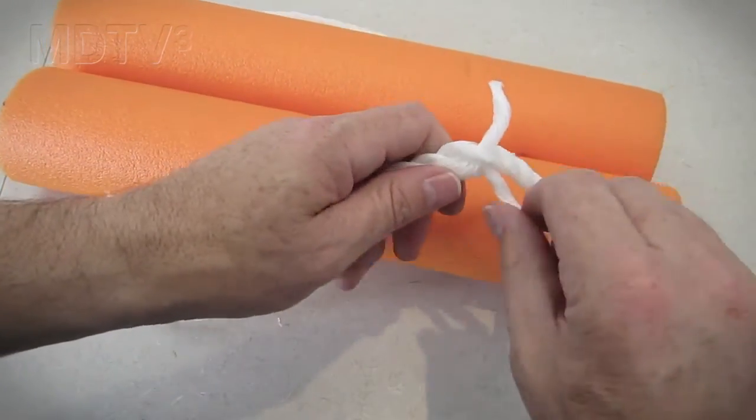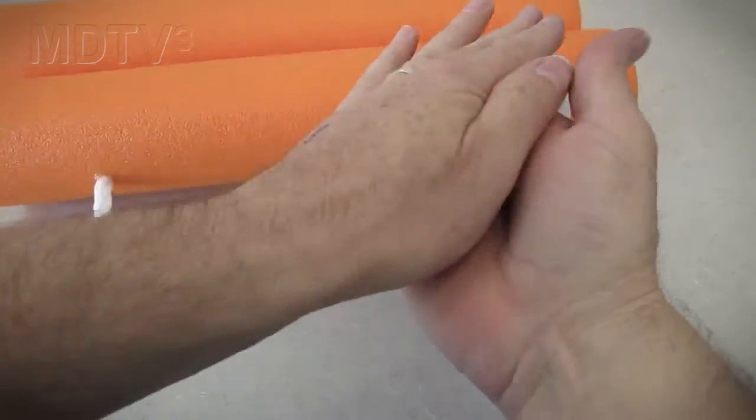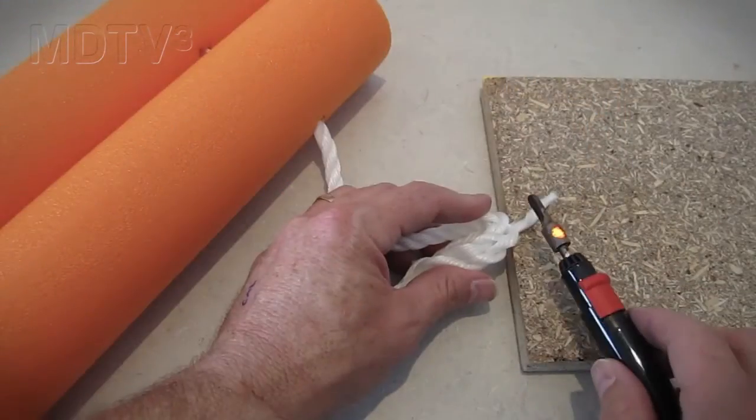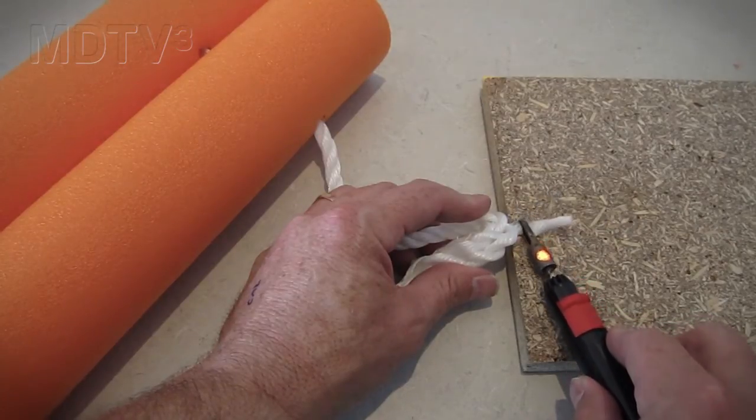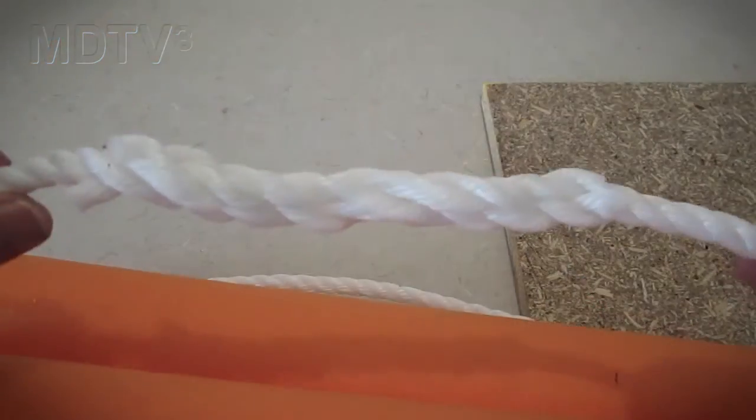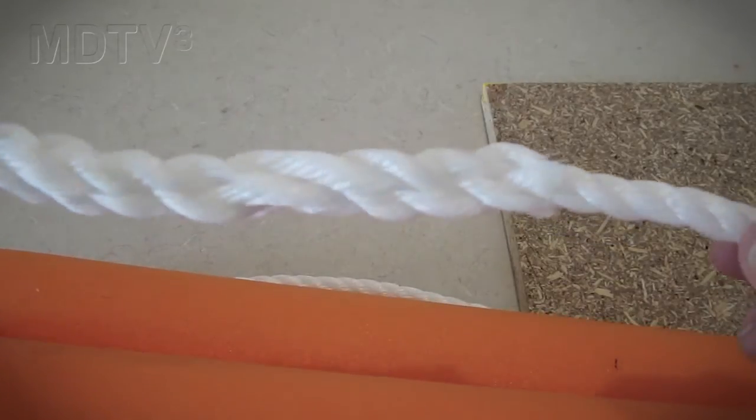Roll the splice between your hands a few times to fully set it into position. Cut off the excess with a hot knife or heated blade for best results. You can just cut the strands off and melt the ends using a match if you do not have a hot knife.